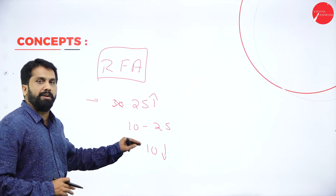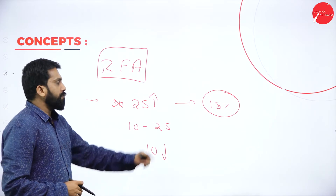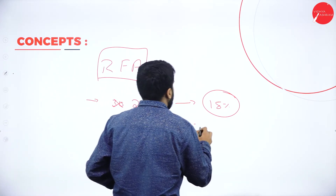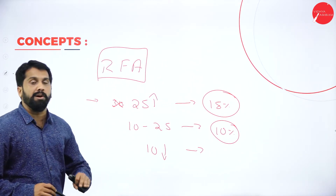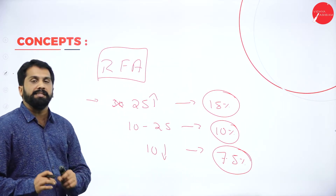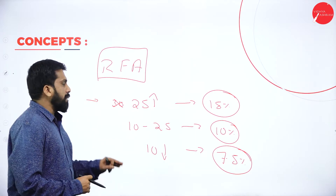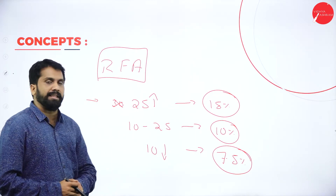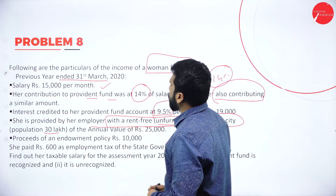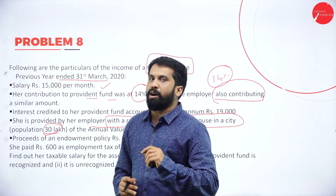If the population is above 25 lakh, the rent-free accommodation value is 15% of your salary. If population is above 10 lakh and below 25 lakh, it is 10%. If population is below 10 lakh, it is 7.5%. Remember: 15%, 10%, and 7.5%. As per this question, population is 30 lakh — above 25 lakh — so the percentage is 15% of salary.